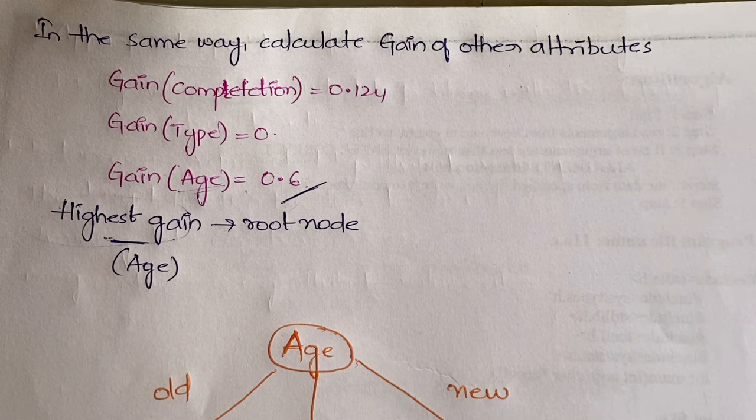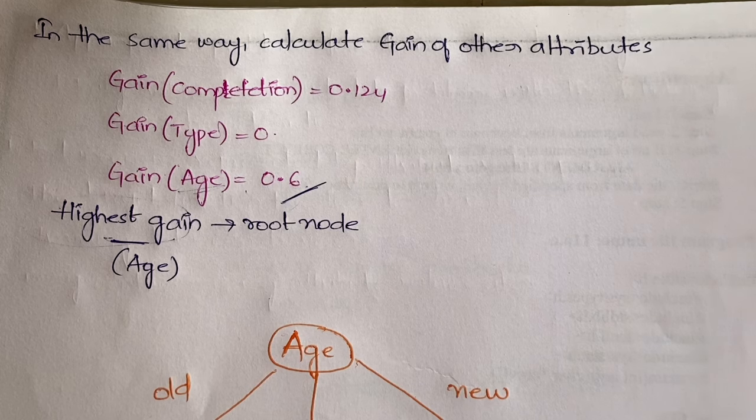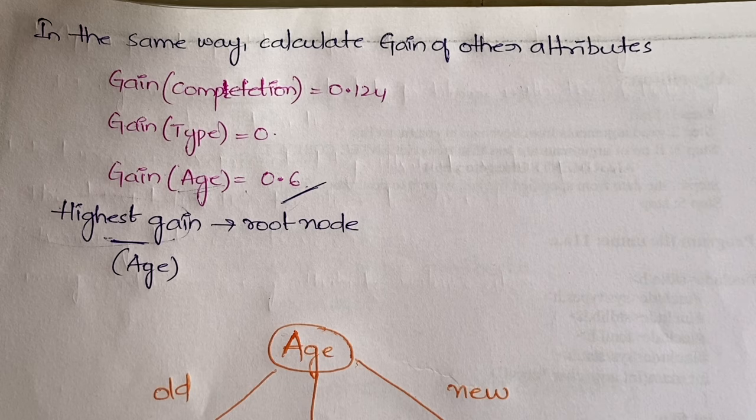That's all for this video. With this, we are done with the decision tree algorithm representation and explanation. In the next video, we will see hypothesis, inductive bias, and issues. I hope this video is useful for you. If yes, hit the like button and share it with your friends. If you're still having any doubts, let me know in the comment section. I'll definitely try to clarify all your doubts.